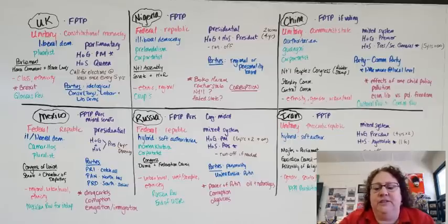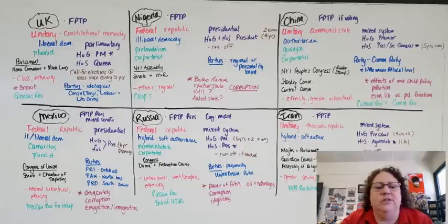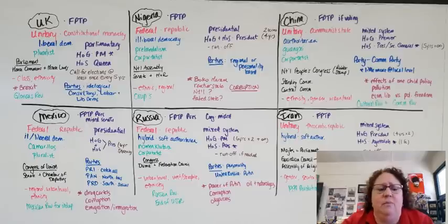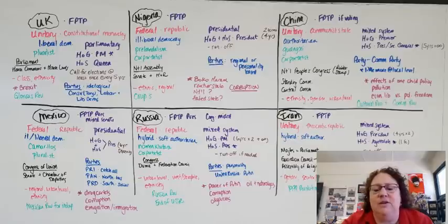Party loyalty determines which district a Member of Parliament runs in — loyal members get easy districts, while backbenchers may be placed in highly competitive ones. We also see party loyalty in the cabinet. Versus a presidential system where the cabinet truly serves an advisory role, in the parliamentary system the cabinet is based on party loyalty. The Prime Minister is considered first among equals and may not be an expert in the area they oversee. The UK has a strong tradition that runs the country. They have a bicameral legislature — the House of Commons is the lower house with all the real power, while the House of Lords is a largely hereditary, non-elected body whose only real power is to amend and review bills.